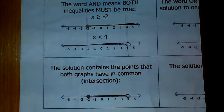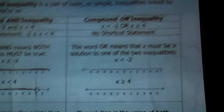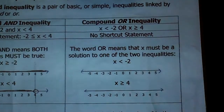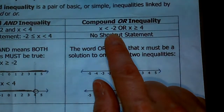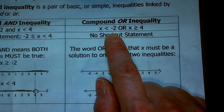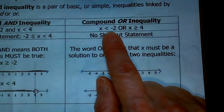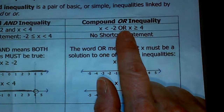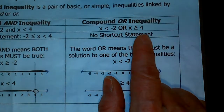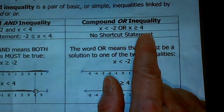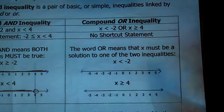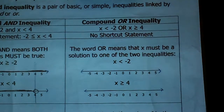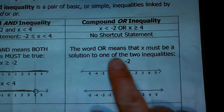The compound 'or' inequality is going to look a little bit different. There's not a shortcut statement. So if I said that x was less than negative 2 or that x was greater than or equal to 4, that's the only way I could say it — I can't put the x in the middle. It's not written like that.